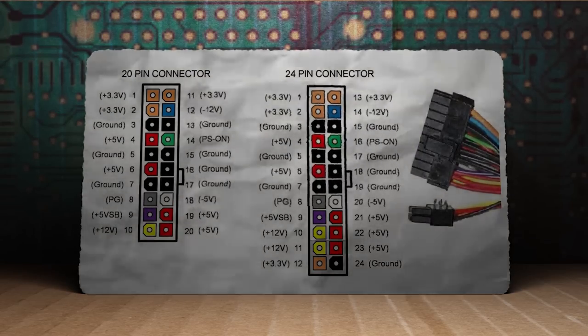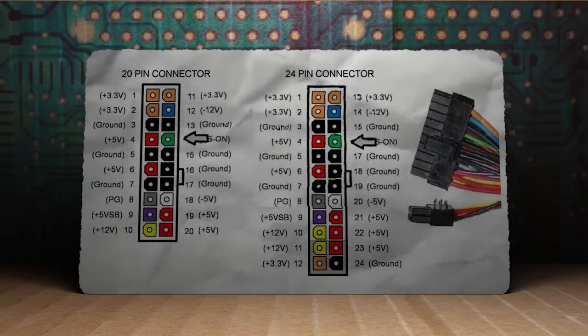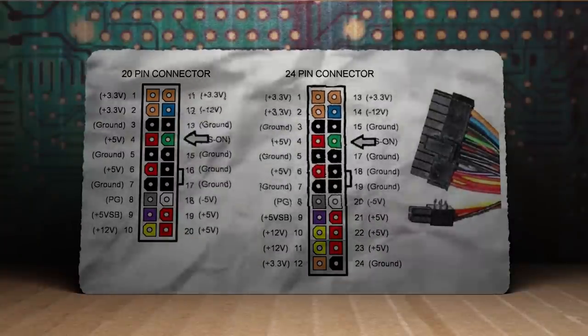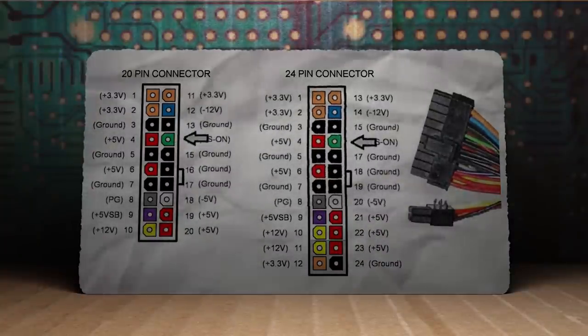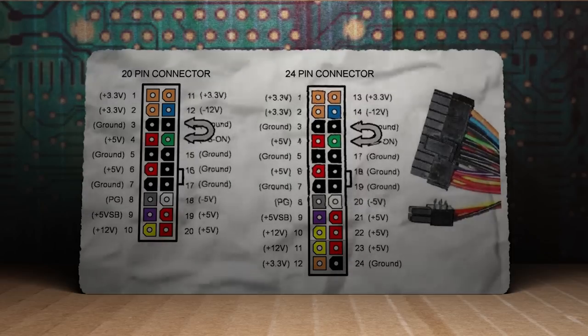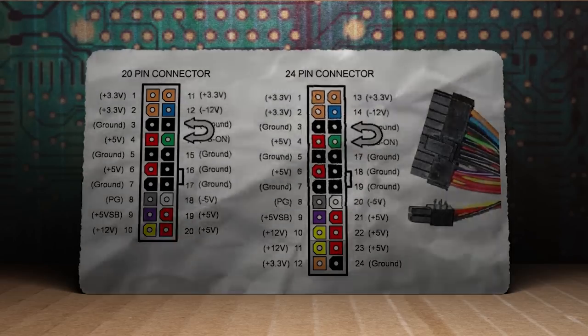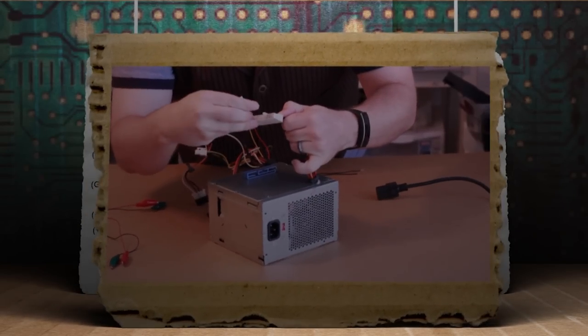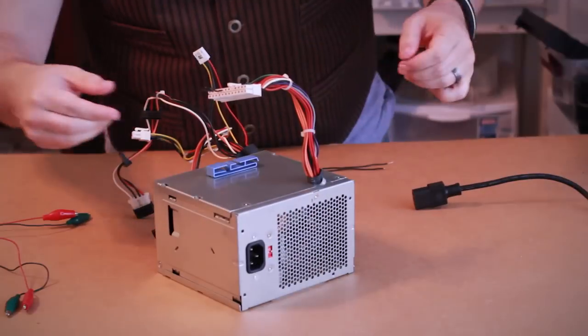A PSU won't turn on unless the power wire senses a load. So to bypass that, with the power supply unplugged, use a jumper wire to connect the green wire to a black ground wire. Then when you add power to the PSU, it should power on. But for now, let's just continue leaving it unplugged.